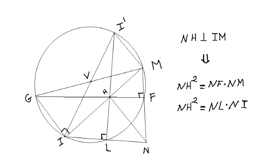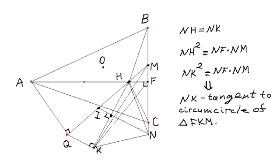Therefore we can write the formulas of the power of a point. NH squared equals NF times NM. And it's also equal to NL times NI.